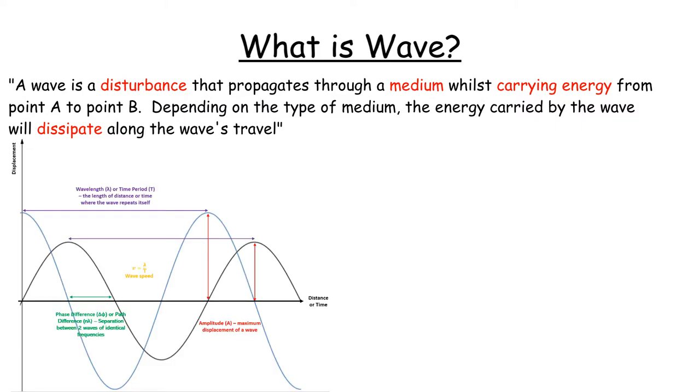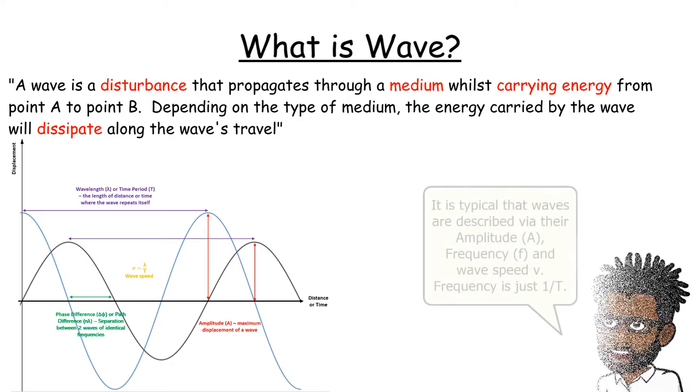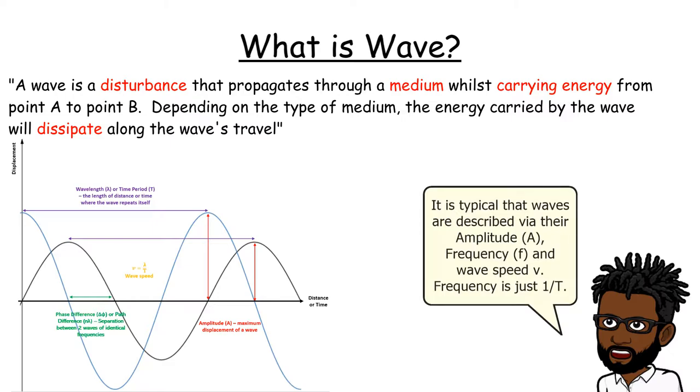There are several quantities which help describe what a wave is, such as the amplitude, which is the maximum displacement of the wave, the wave's propagation speed, the wavelength or time period, which describes how a wave repeats itself in time and space, and the phase difference between two waves of the same type.